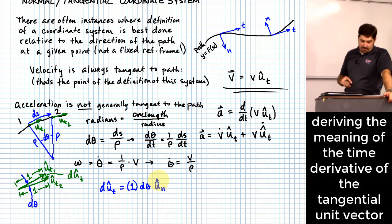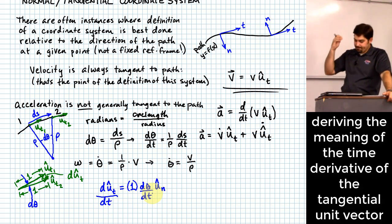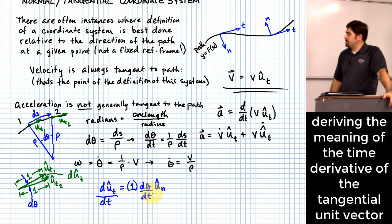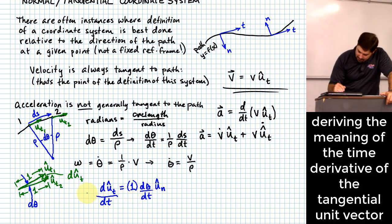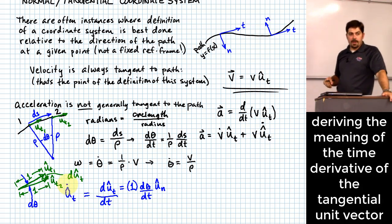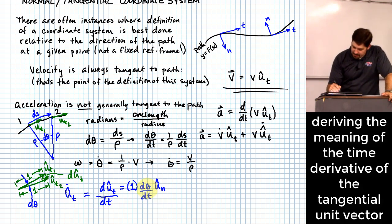Now we can divide both sides by Dt. We say this happens over an infinitesimally small period of time. On the left we have u_t dot — the time derivative of that unit vector. And we can clean that up because D theta over Dt is just theta dot. So this equals theta dot times the unit vector in the normal orientation.